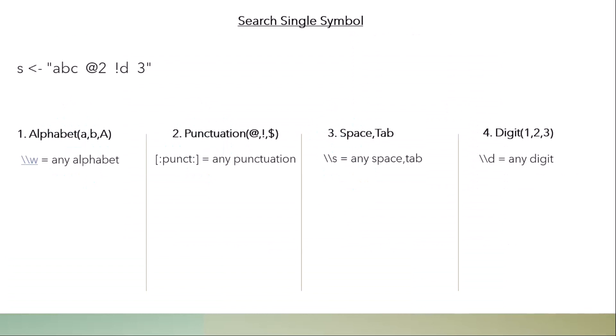First we will learn how to extract a single symbol or single character. As you can see in the string on screen, there are four alphabets: A, B, C, and D. To extract any alphabet, you use double backslash W. The function you use is `str_view`. When you run this command, it returns the first element — since there are four alphabets A, B, C, D, the first element returned is A.